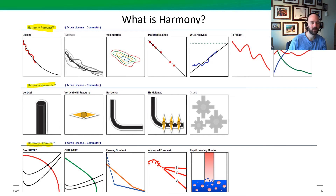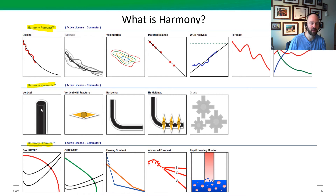So what is Harmony? Harmony is the program you've hopefully installed on your computer — it has a green icon with an H in it. Within there, there are three different modules that engineers use. Today, we're going to be focusing on Optimize. Other times, people who need to do decline analysis or create an average well will use the Forecast module. And if you want to do rate transient analysis — combining the well's historical volumes and flowing pressures — you can do estimates of permeability, damage, and even some complex numerical simulation. But today, we're just going to focus on Optimize.